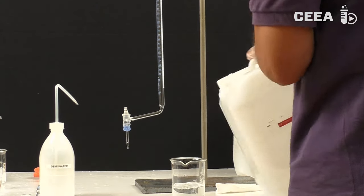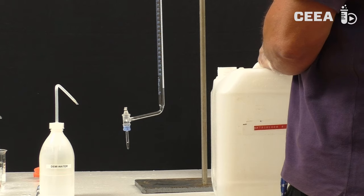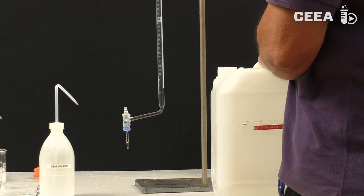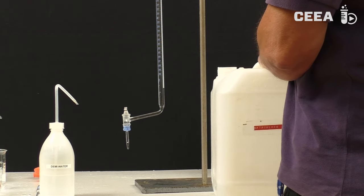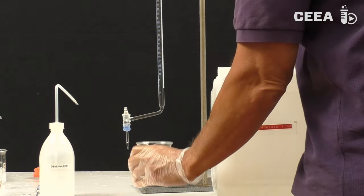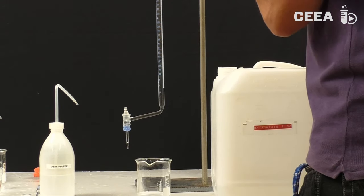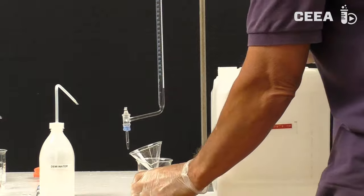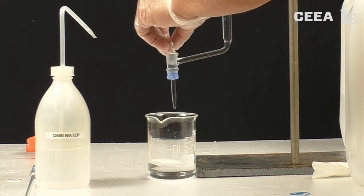The burette can now be filled with titrant. Allow a bit of titrant to escape in order to avoid air bubbles in the tap.